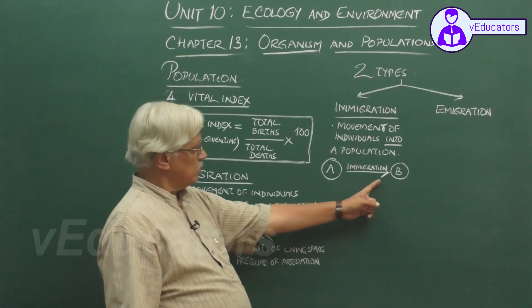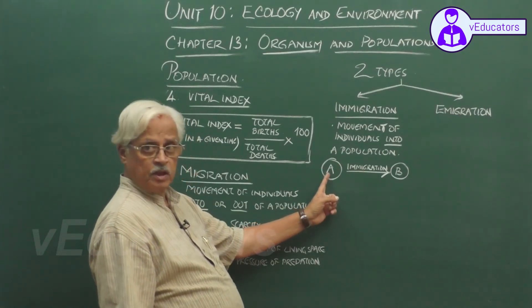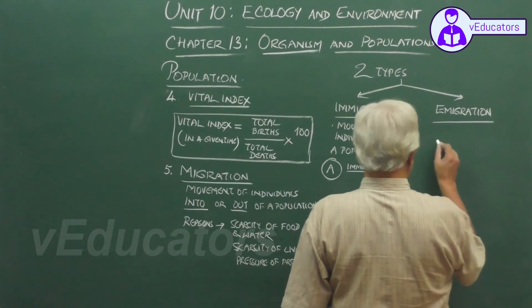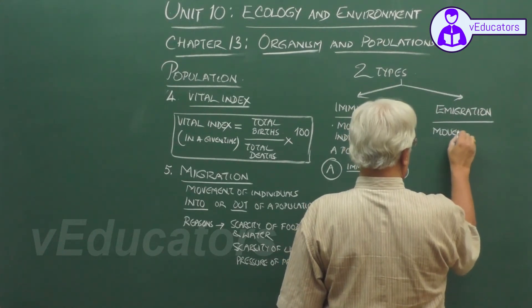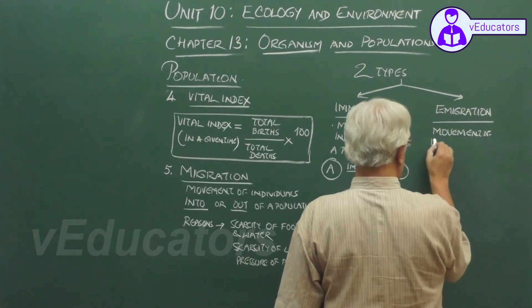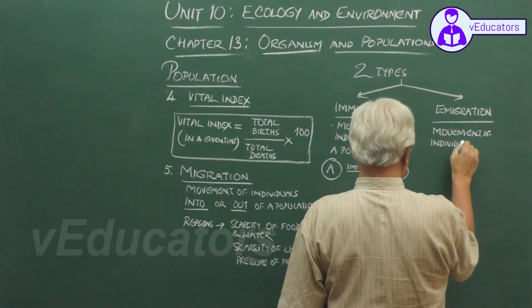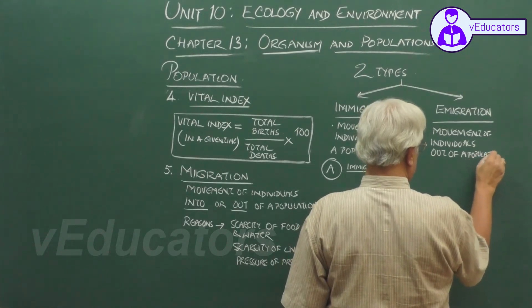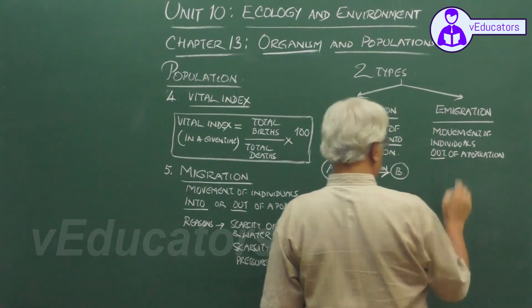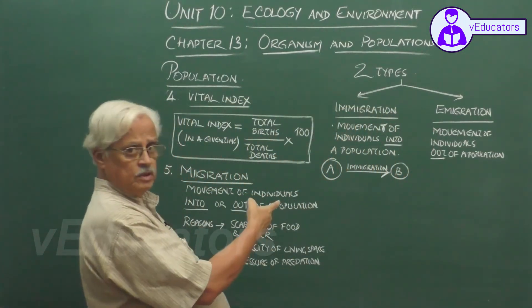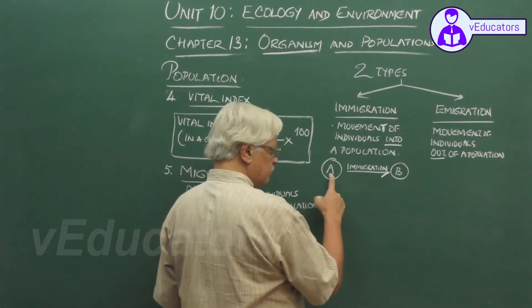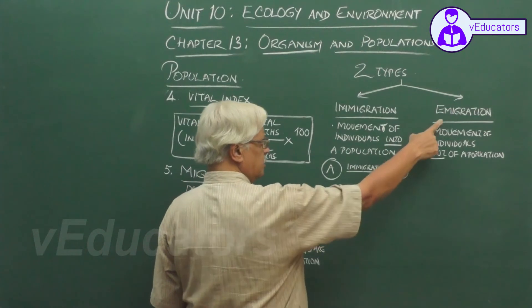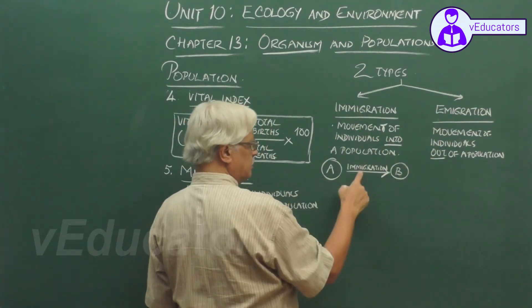For population A, it is emigration. Emigration is the movement of individuals out of a population. As discussed, individuals leaving population A and reaching population B means for A it is emigration, and for B it is immigration.